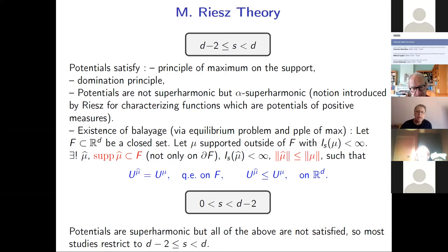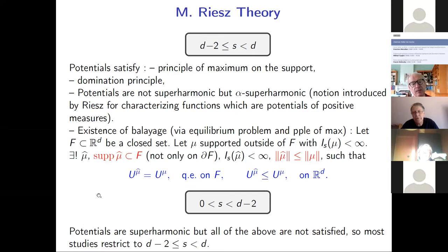When S is smaller than D minus two, most of those properties are lost; the only one satisfied is that the potential is subharmonic. This difference means the first case (D minus two < S < D) is more studied than the second one, and we will also get more properties for the first case.